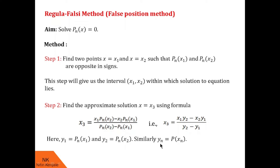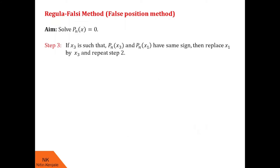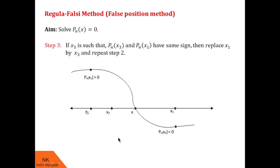Similarly, yn = f(xn). Now we proceed to Step 3. To understand this step, consider a diagram of the curve f(x). Since the curve crosses the x-axis at a point, that crossing is the solution we want to find. We chose x1 and x2 such that f(x1) and f(x2) are opposite in sign.